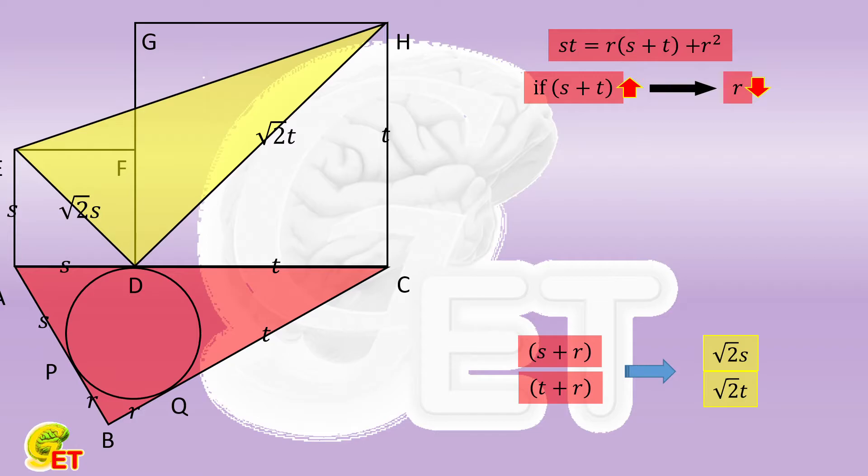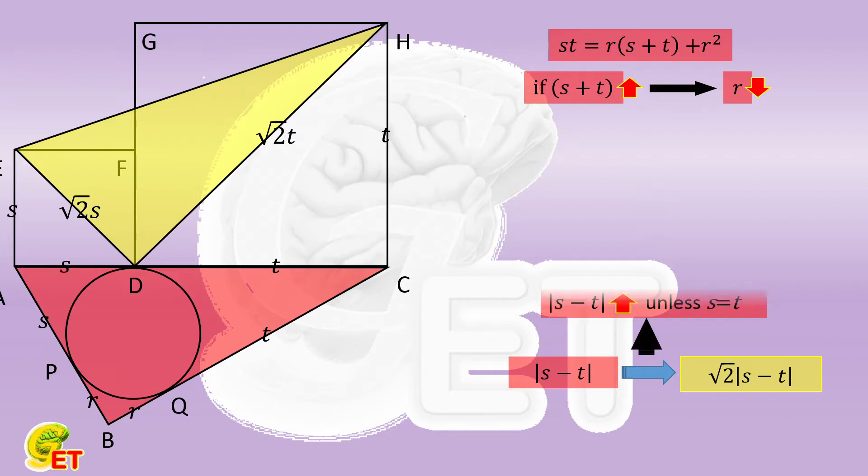We calculate the difference between the two legs. In the original triangle, it's the difference between S and T, and in the new one, it becomes square root of 2 times their difference. That means, unless S is equal to T, in other words the original triangle is isosceles right, the difference between the two legs will increase.